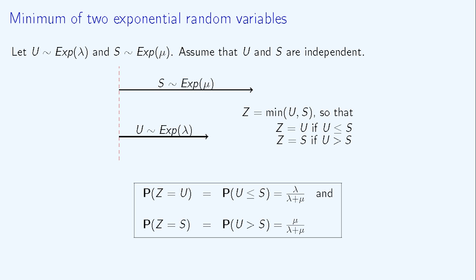Let's look at the probability that the next event is an arrival, which is another way to say that U is less than S. It can be demonstrated that this probability is lambda divided by lambda plus mu. The probability that the next event is a departure corresponds to Z equals S, and it turns out to be mu divided by lambda plus mu. The first case corresponds to U less than S, or arrival before departure, while the second case corresponds to U greater than S, or departure before arrival.